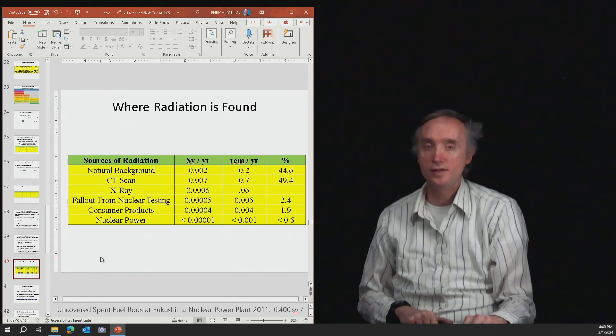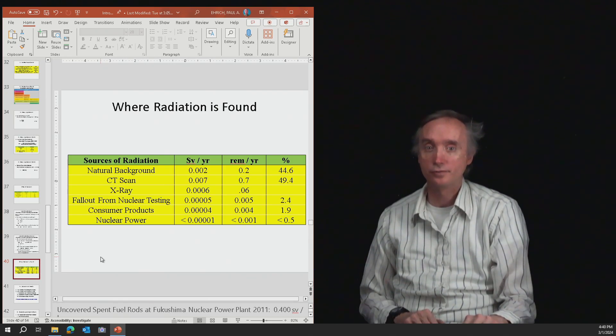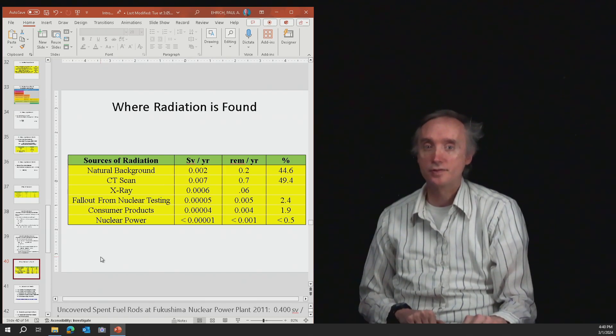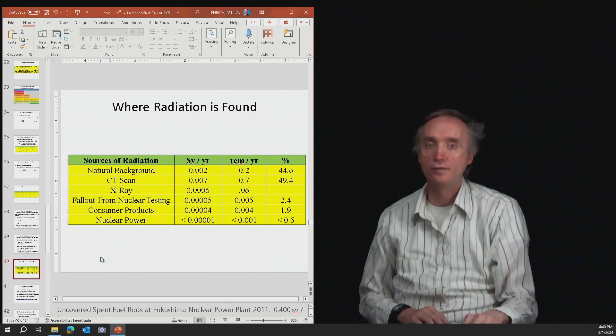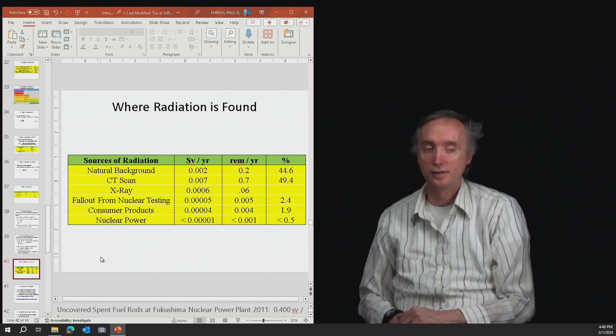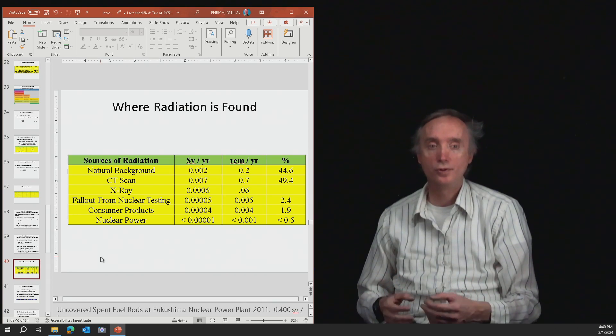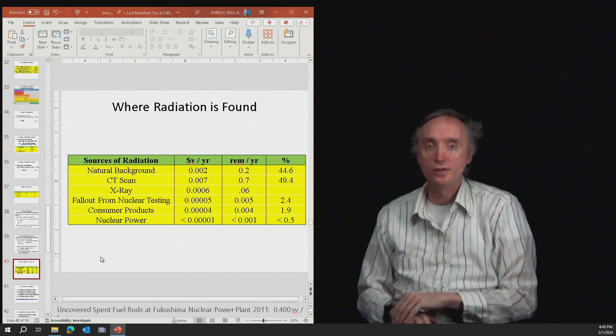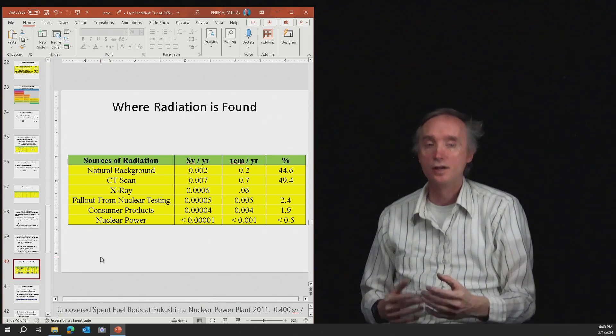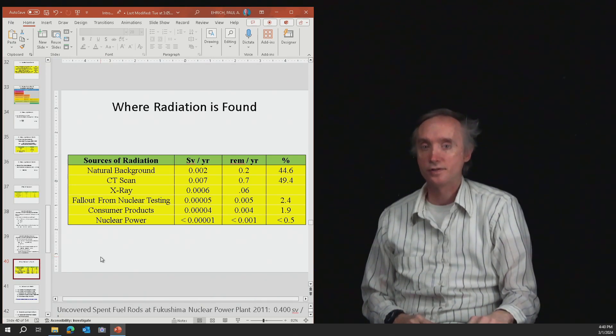So CT scans do give you a lot of radiation. An X-ray is safer, and so that is 0.0006 sieverts per year, and then the fallout from nuclear testing. So back in the 1950s, we would explode nuclear weapons on the surface, and so all of that radioactivity would go into our atmosphere. Well, there's still some radioactivity from that nuclear testing.